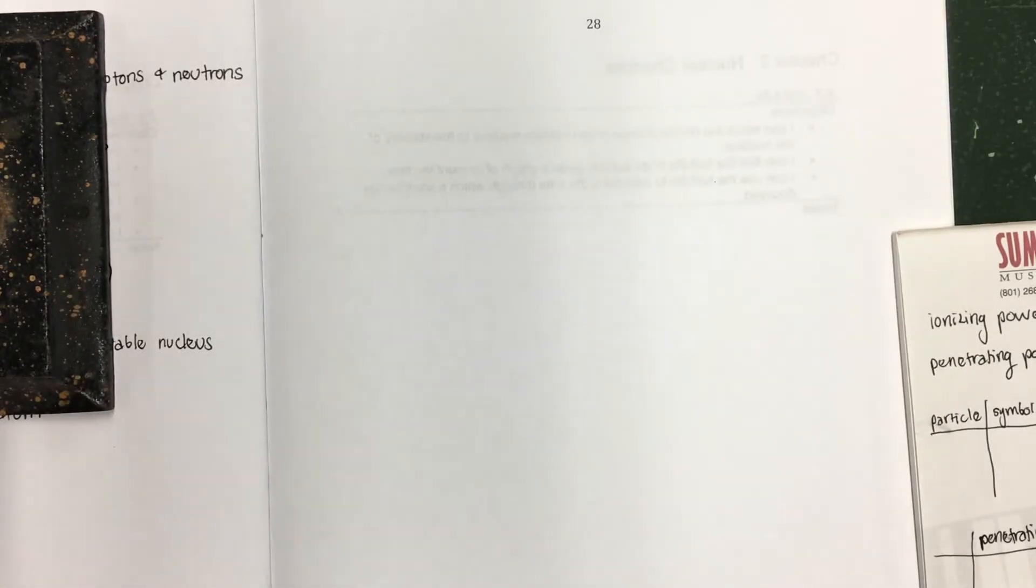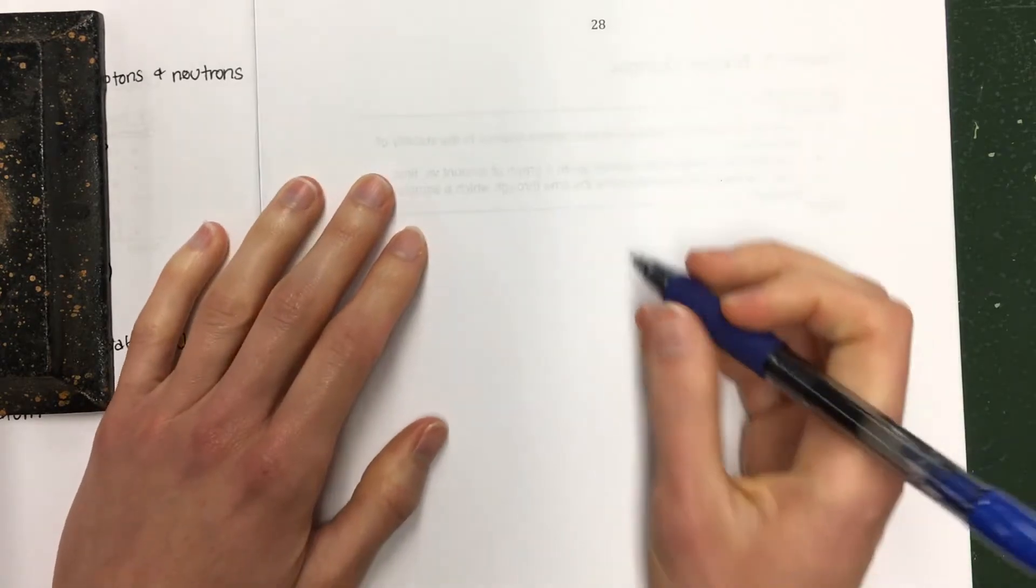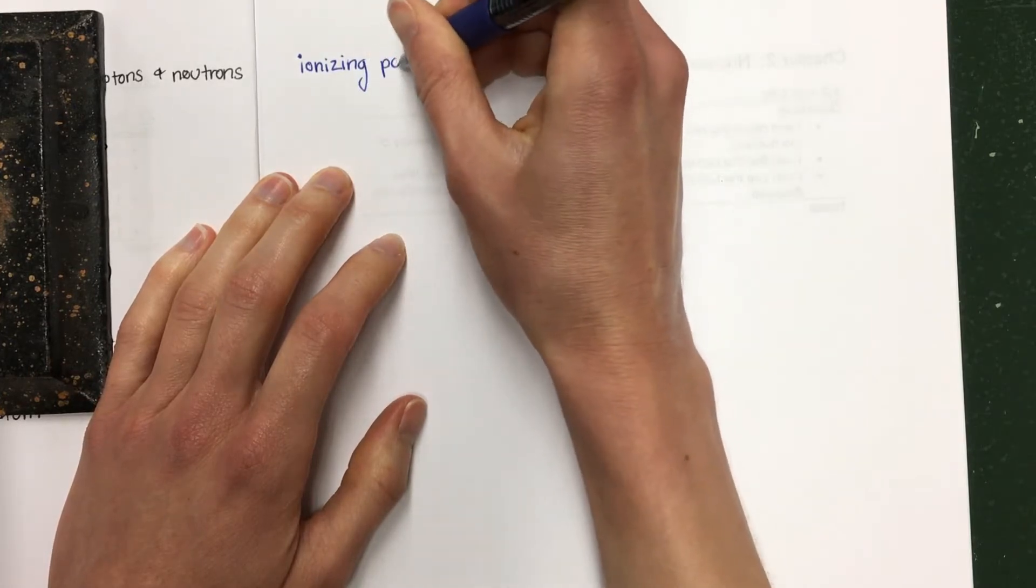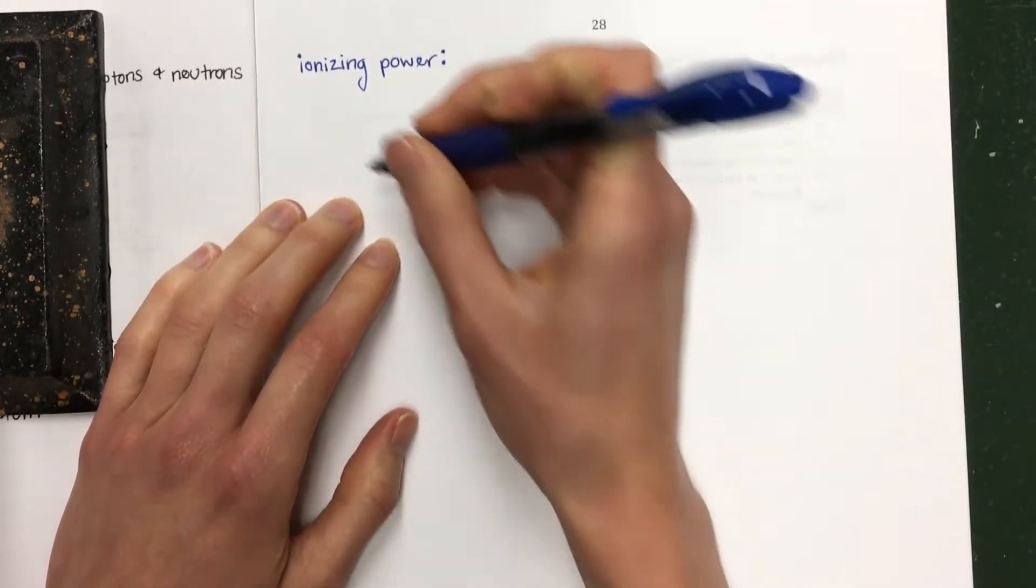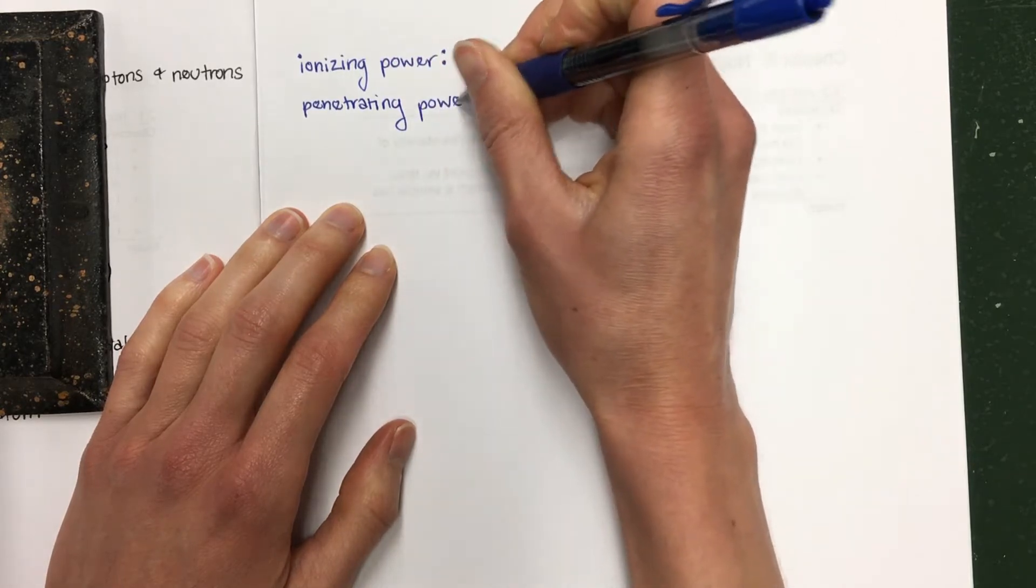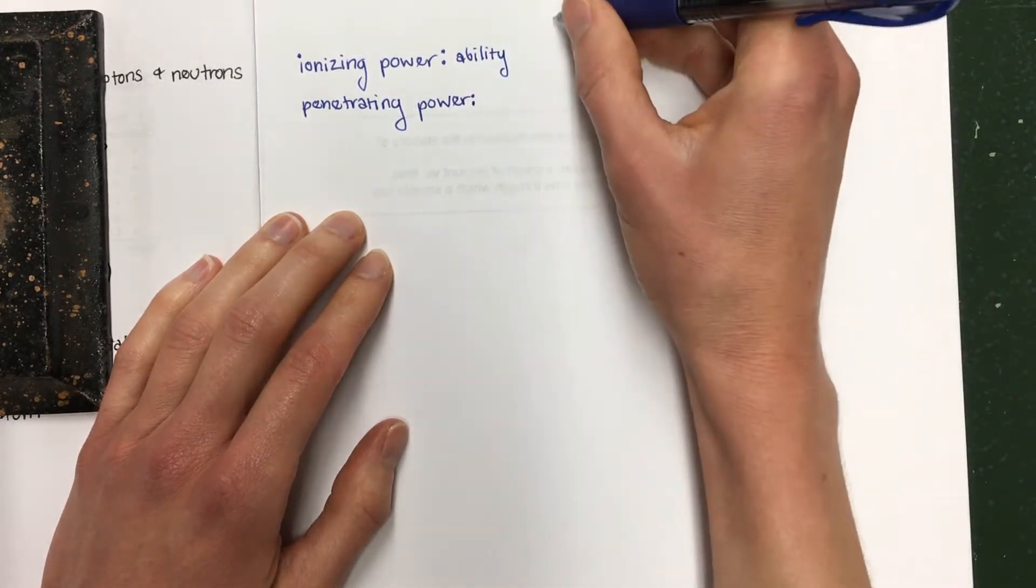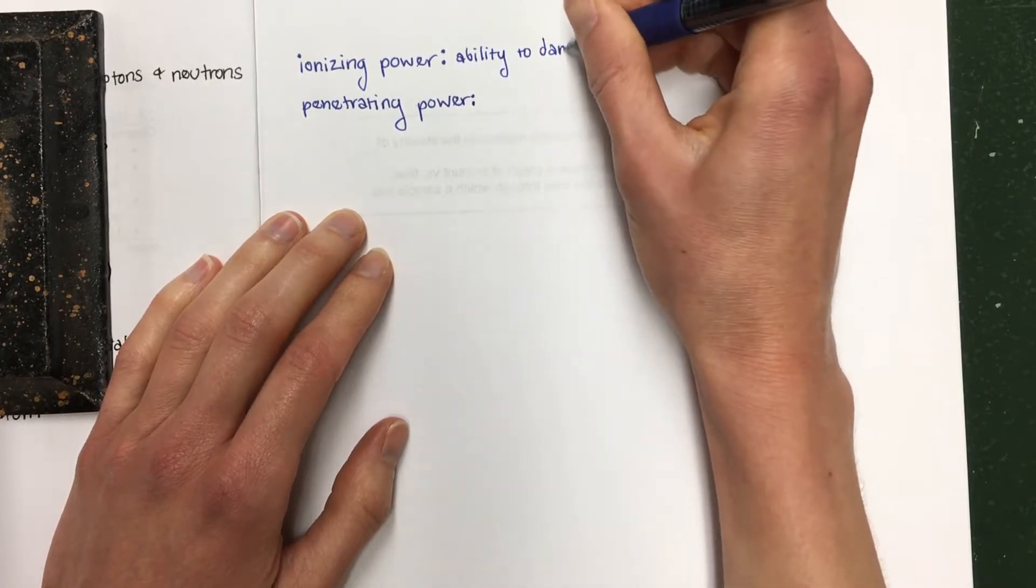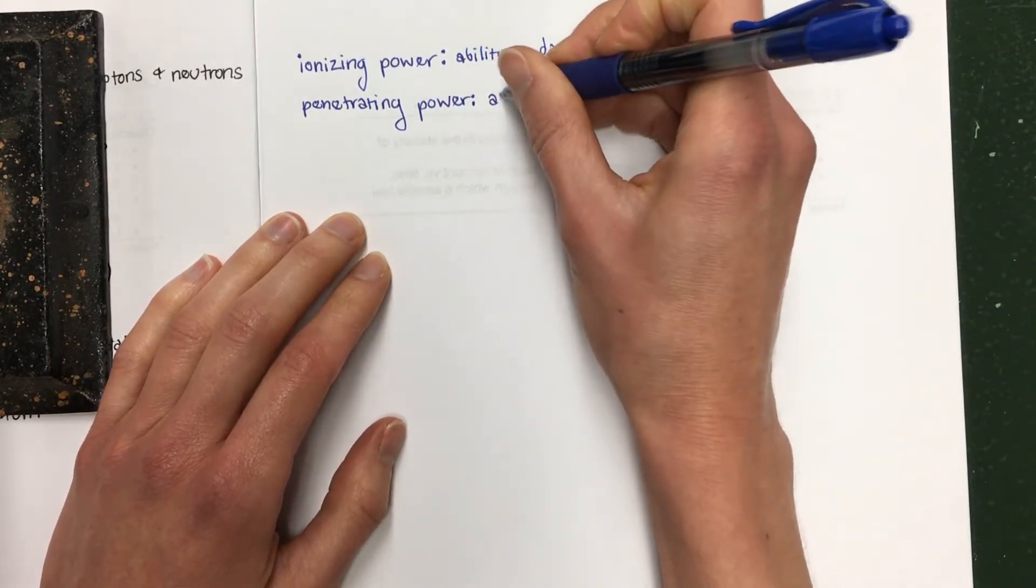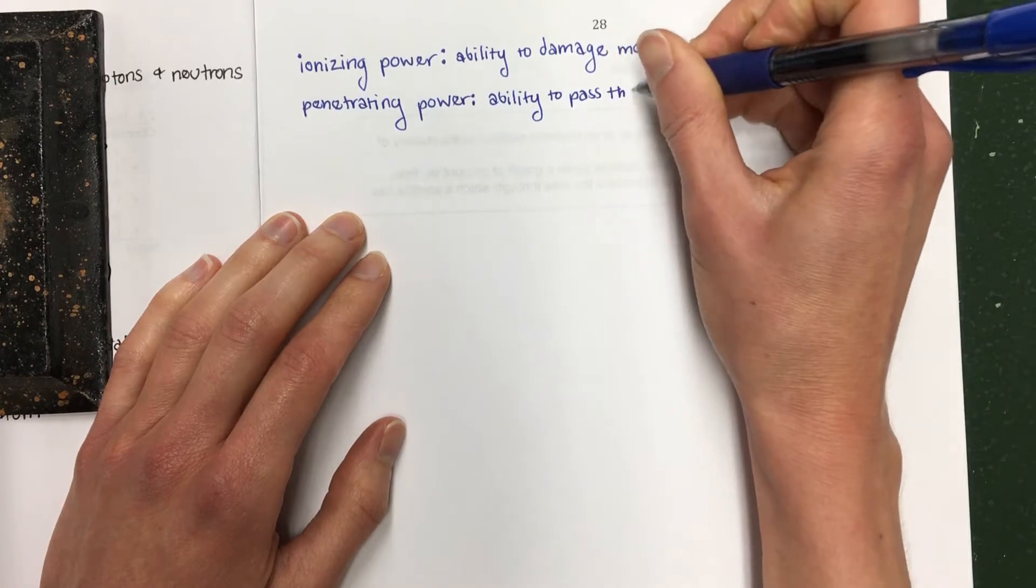Hey everyone! In this video we're going to be talking about different types of radioactive decay. Before we do that, I want to go over a couple of vocabulary terms. We're going to be talking about the ionizing power and the penetrating power of these different types of radiation. The ionizing power is that radiation's ability to damage molecules, specifically to pull electrons off of them. Anything that has high ionizing power is very damaging, and penetrating power is the ability of any type of radiation to pass through matter.